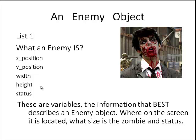The variables are properties that describe what the object is — the information that is essential to describe the thing the object represents. The above is just a short list to get us started; it is the variables or properties of our object.